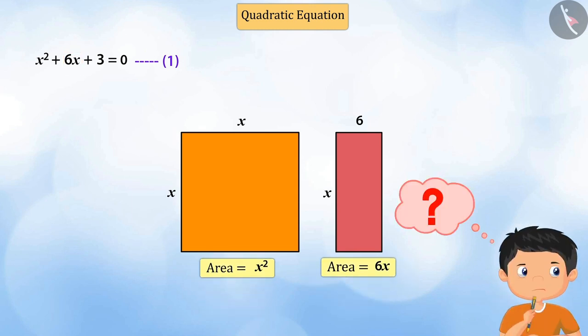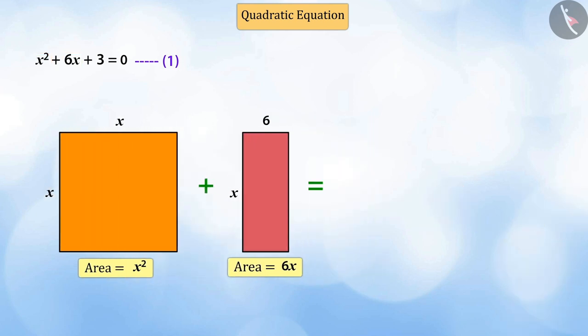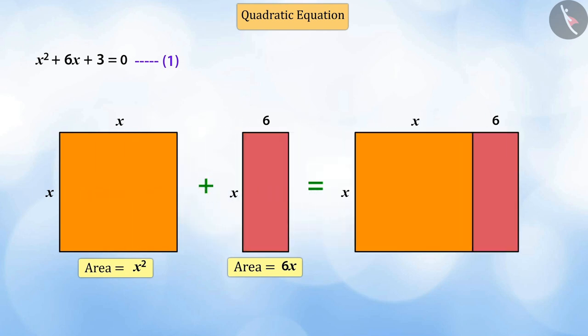Can you combine these two shapes to form a new shape? Well done! If we combine the given square and rectangle, we shall get a new rectangle, whose area will be equal to the sum of the area of the square and the area of the first rectangle, which means that its area would be x to the power 2 plus 6x.